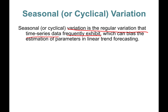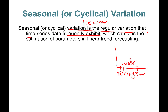For example, consider ice cream sales for your company. In the spring and summer quarters, sales are going up, but summer is always much higher than the following fall, and then the next summer spikes up again. This is something a manager asked me: how do I account for these seasonal variations in sales?